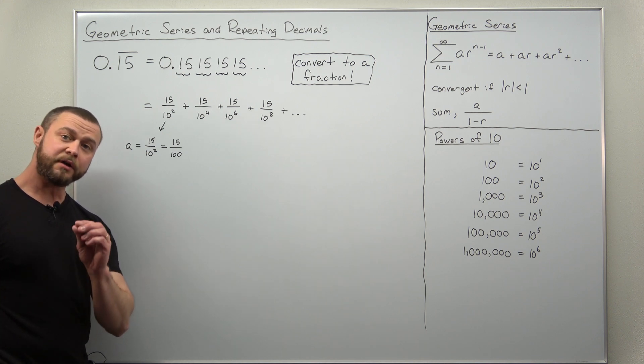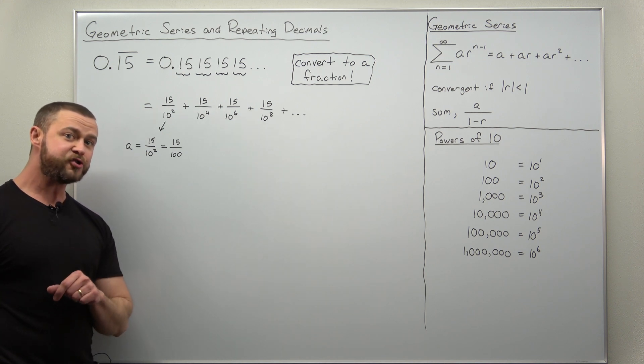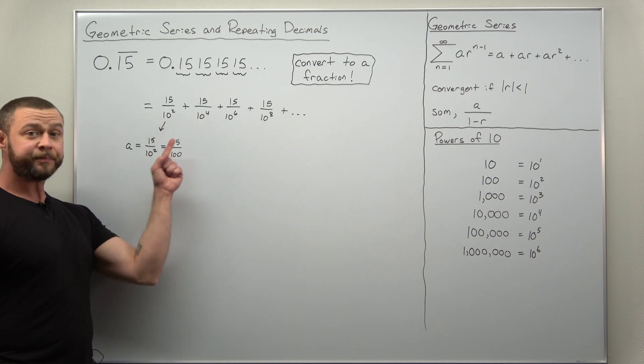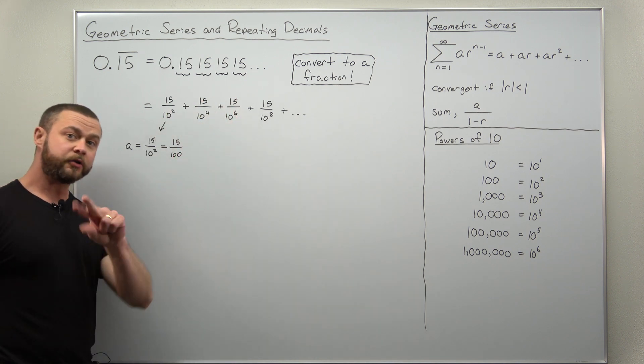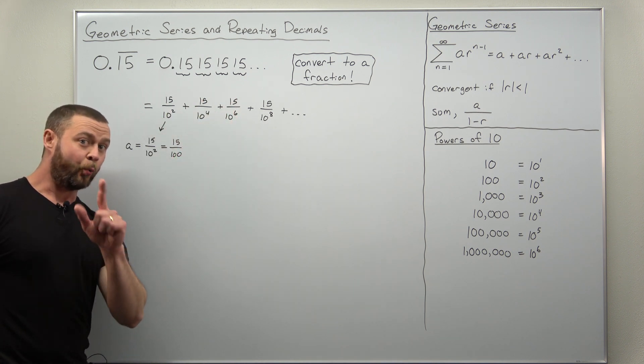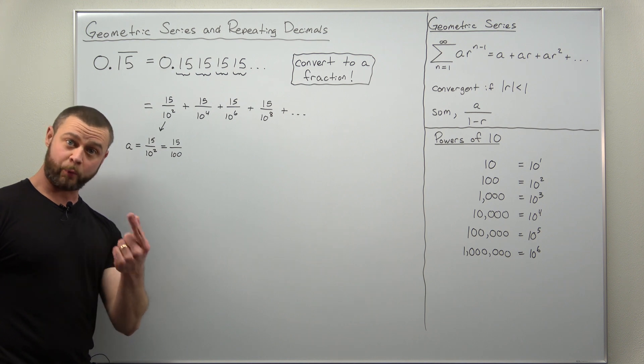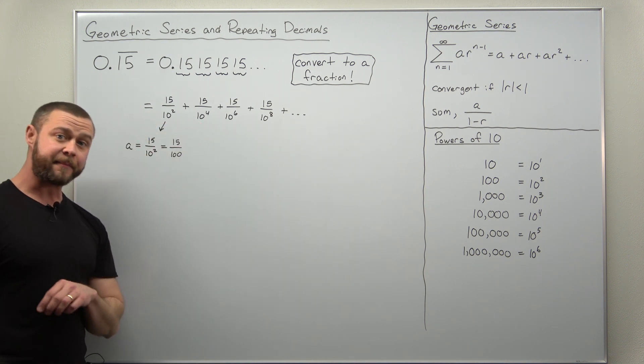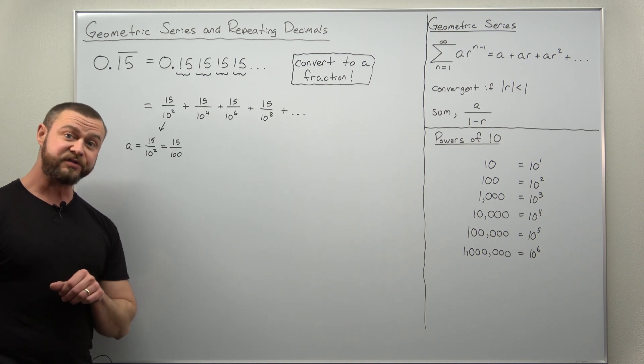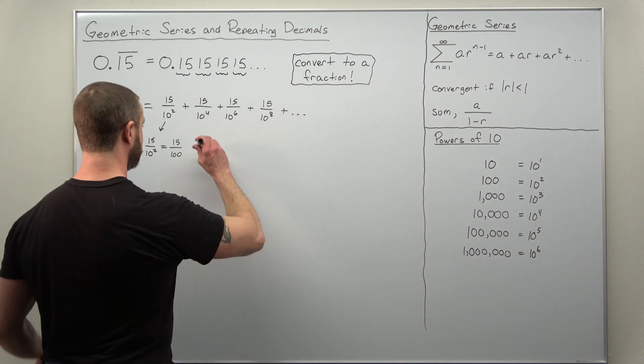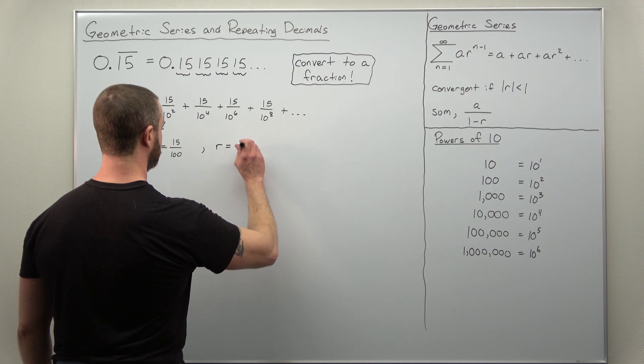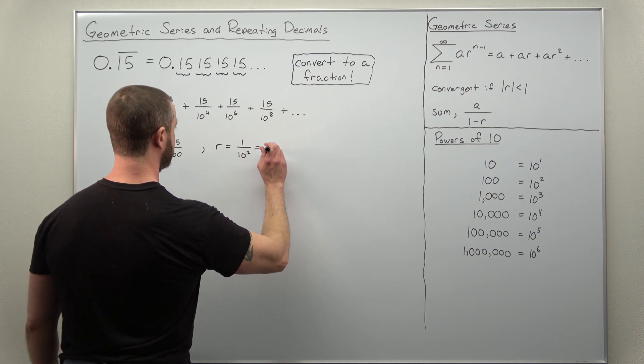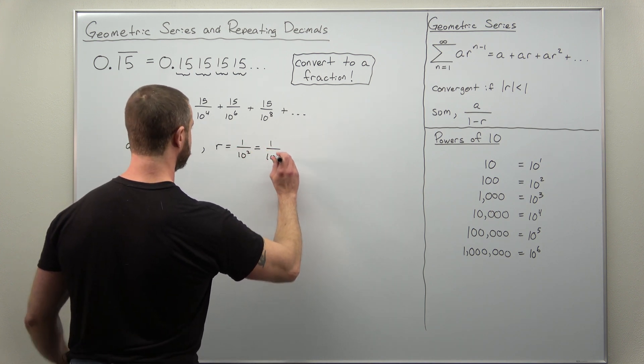And you can determine the value for the common ratio r either noticing each term you're multiplying by an additional 1 over 100, or 1 over 10 squared. Or you can look at a term divided by previous term that will always come out to be 1 over 100. So our value for r. 1 over 10 squared. Same thing as 1 over 100.